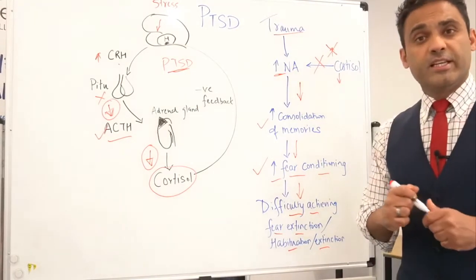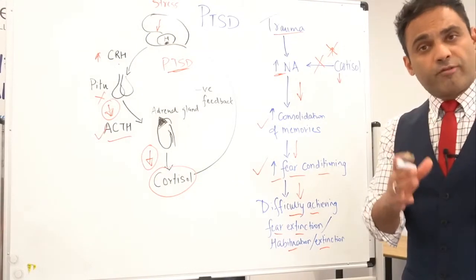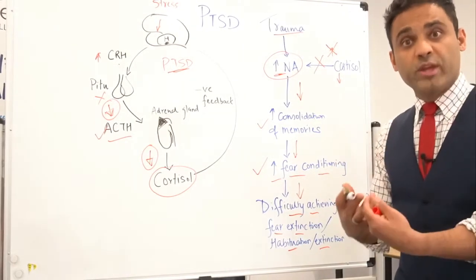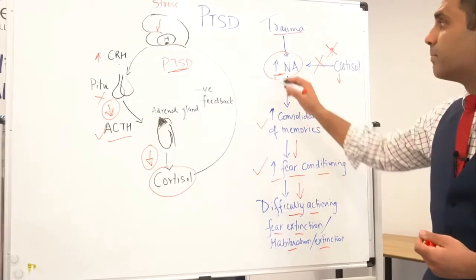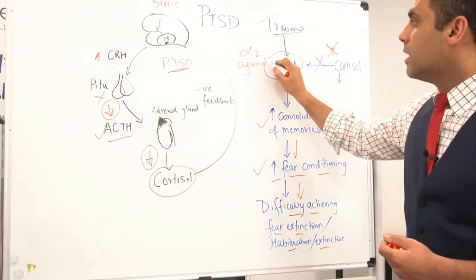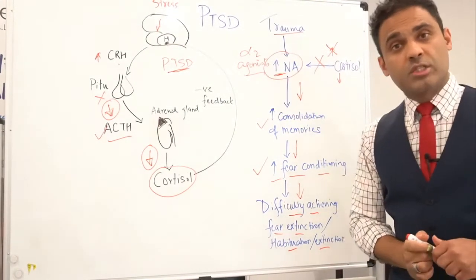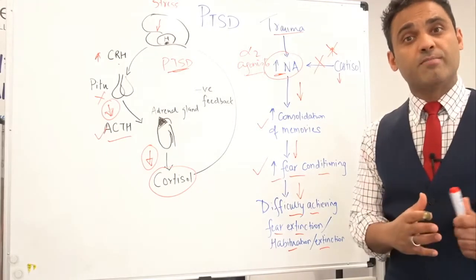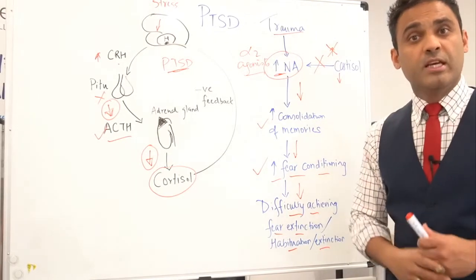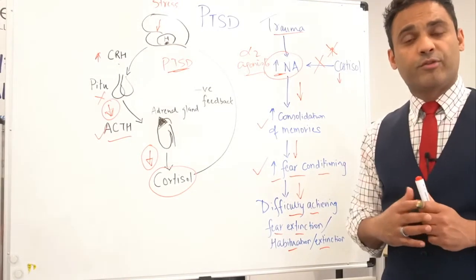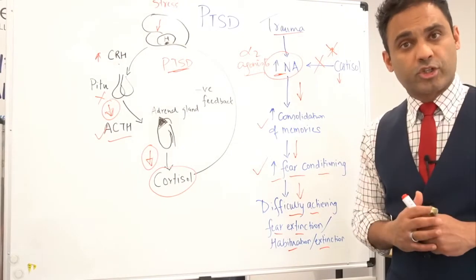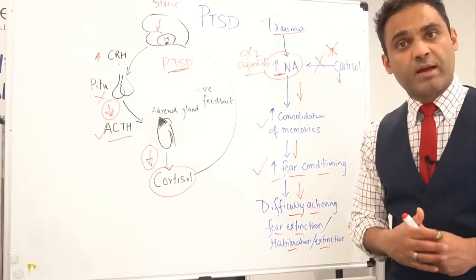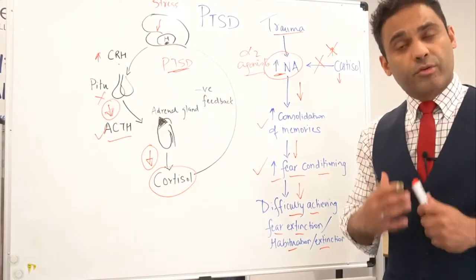Therefore, from a clinical perspective, it is very important that in the initial stages of management we reduce noradrenaline and the hyperarousal that comes with it. This can be done by using alpha-2 agonists. The ones commonly used in post-traumatic stress disorder are prazosin and clonidine. Clonidine can be started at 50 micrograms, gradually increasing to about 200 micrograms given at night time. The main side effect to watch for is a drop in blood pressure — it can result in postural hypotension. Prazosin can also drop blood pressure and can be started at one milligram initially at night time, but because of a short half-life can be given three times a day.